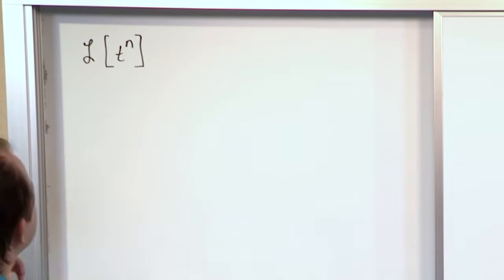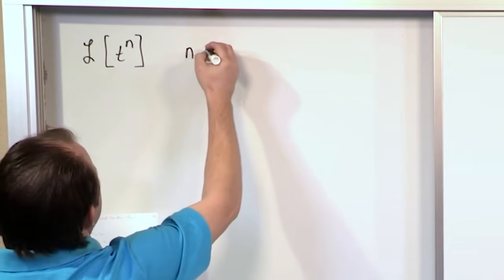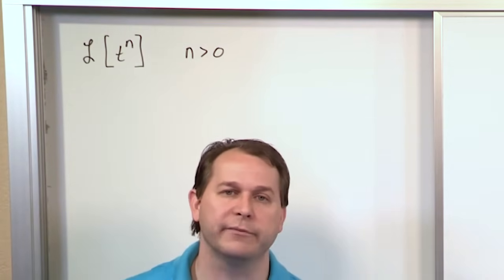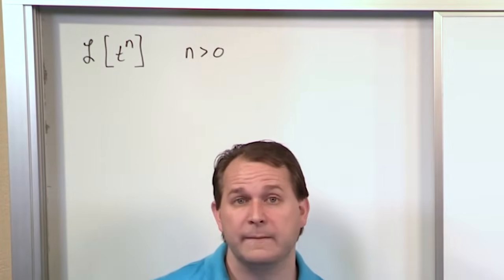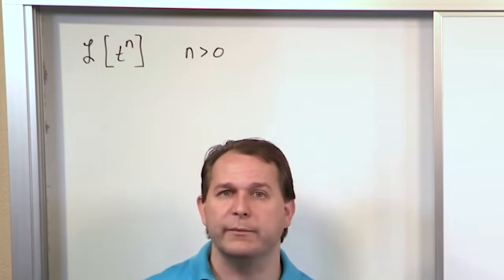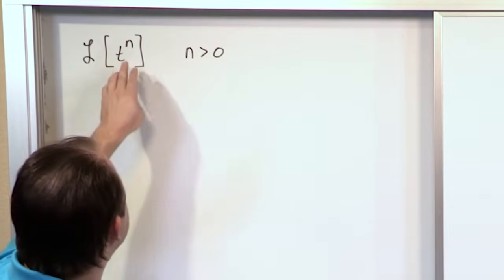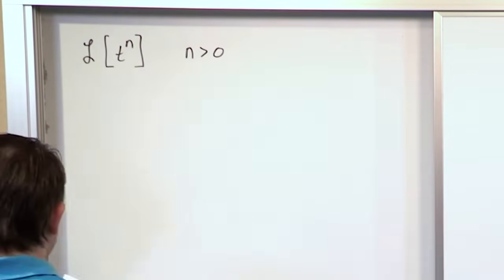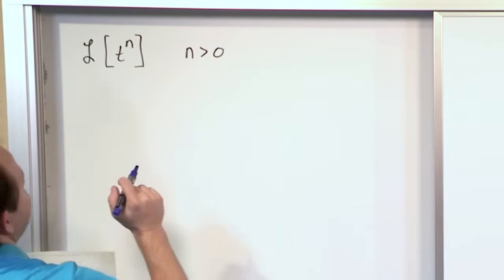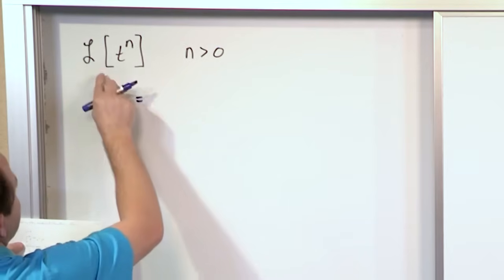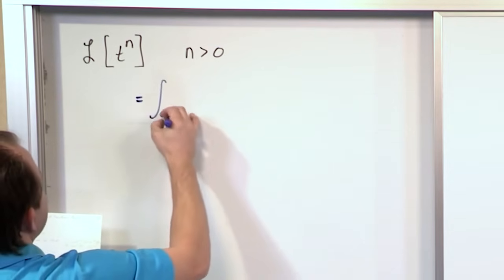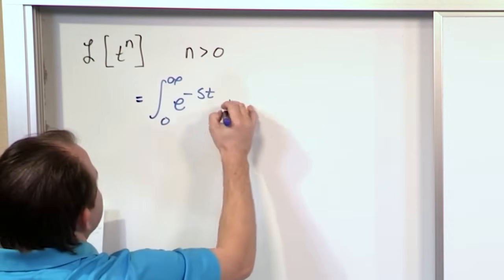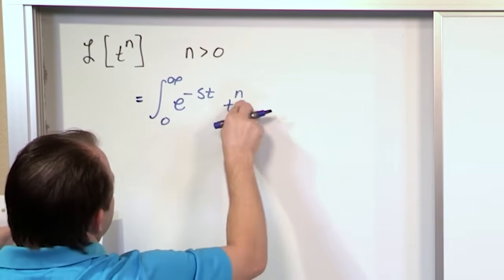Notice we're talking about functions of time, and in this case n is greater than zero. So this is going to let you understand how to take Laplace Transforms of t squared, t to the fifth, t to the one, whatever — when you have powers of t. What we want to do is apply the definition of the Laplace Transform. So this is going to equal the integral from zero to infinity of e to the minus s times t, times t to the power of n, which we don't know what n is.